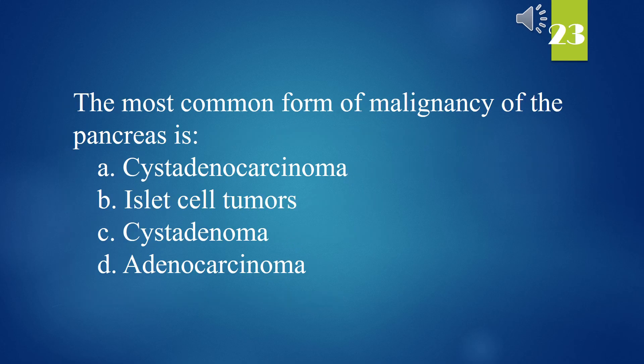The most common form of malignancy of the pancreas is: A. Cystadenocarcinoma. B. Islet cell tumors. C. Cystadenoma. D. Adenocarcinoma. The answer is D. Adenocarcinoma.